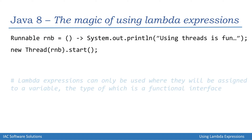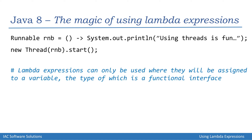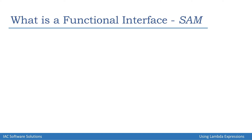First, there is an important note: lambda expressions can only — and there is a big 'only' — lambda expressions can only be used where they will be assigned to a variable whose type is a functional interface. So what is a functional interface? A functional interface in Java is one that has a single abstract method — those methods without bodies that must be implemented in subclasses. An interface with only one abstract method is called a functional interface.